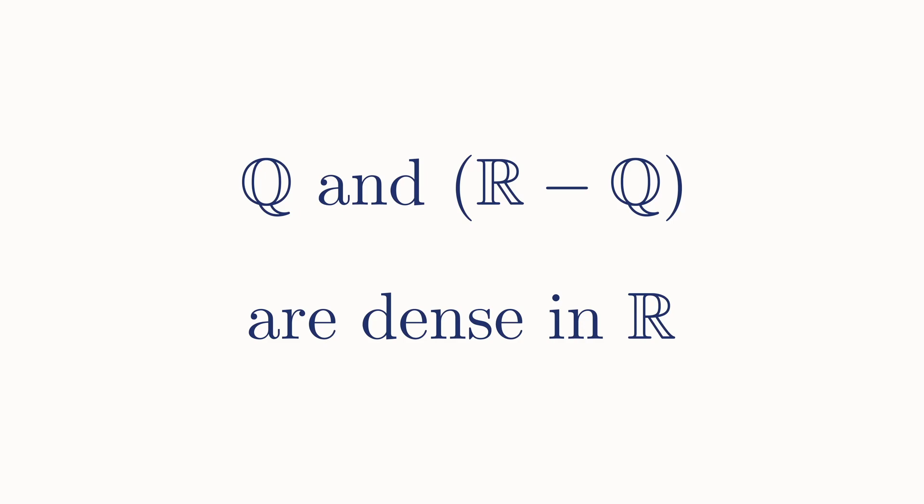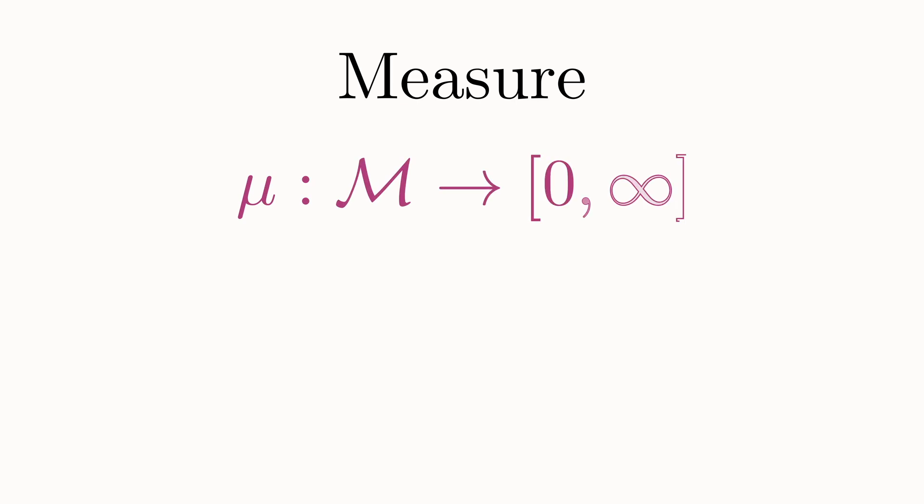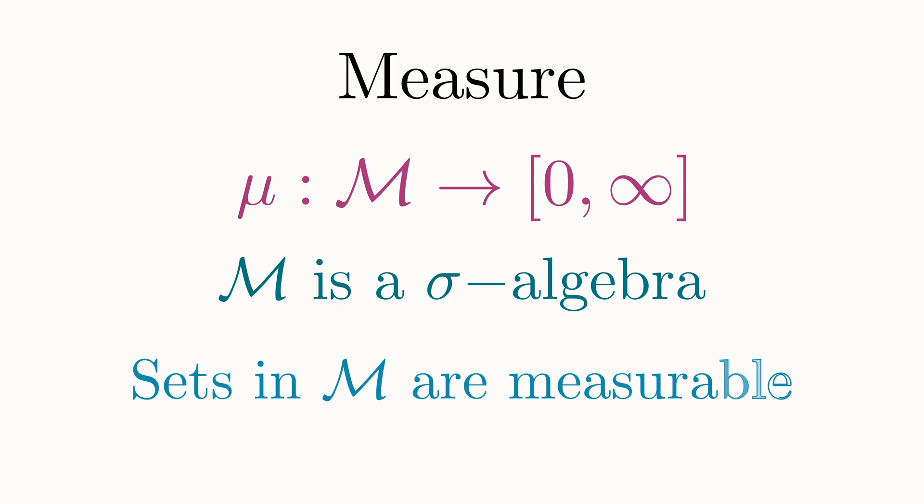Now in order to calculate the length of a subset on the real line, the key definition we will need is that of a measure. Recall that a measure is a function that assigns a real number between 0 and infinity to certain subsets of whatever object we happen to be working with. These subsets form something called a sigma algebra. I made an entire video explaining all of this in detail, and I've linked it below so you can check that out if you're interested.